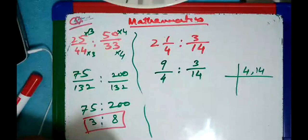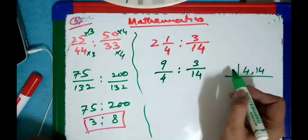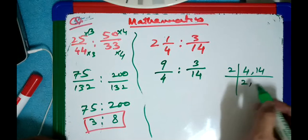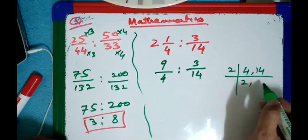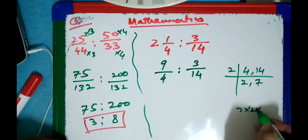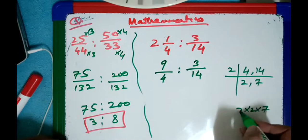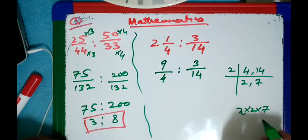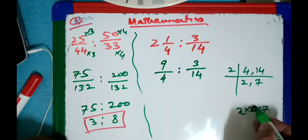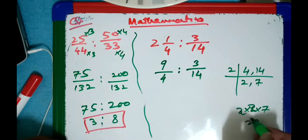You start with 2. Let it complete. 2 goes into 4, 2 goes into 7, so 14. Now 2 × 2 × 7. This is the complete LCM. So the complete LCM will be: 2 × 4 = 8... actually 2 into 2 is 4, into 7 is 28. So the answer is 28.